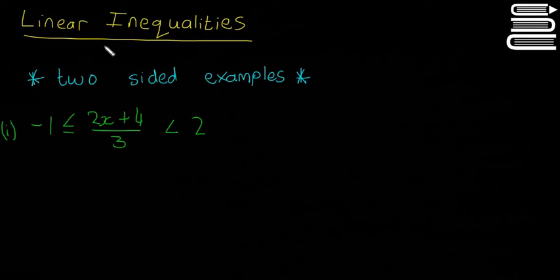This is just going to be a quick video where we talk about some harder examples of linear inequalities, specifically two-sided examples. So this is a two-sided example in front here: you have -1 ≤ (2x+4)/3 < 2. There are two inequality signs in one line.